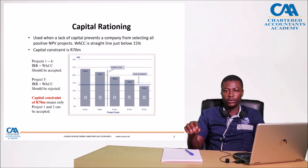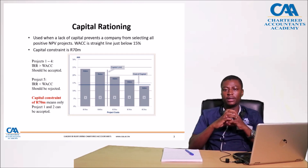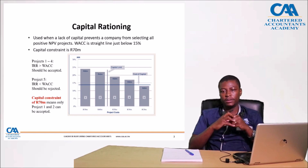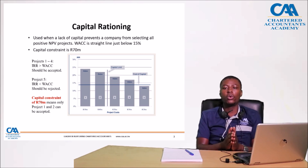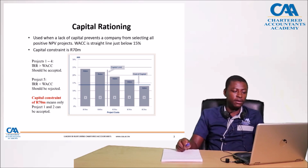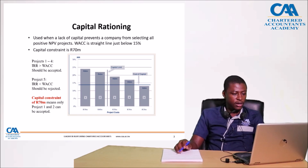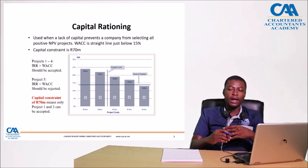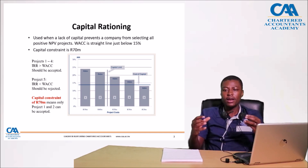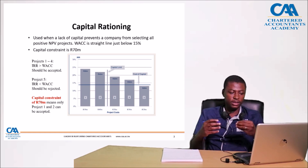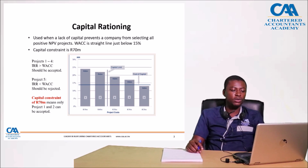What do we mean by capital rationing? You will find that in most businesses, companies can get a number of opportunities, but their available capital to be invested can become a constraining factor. The question is: given their available capital, which projects should they invest in and why? If we look at the example where we have a constraint of 70 million dollars and we look at projects 1 to 4, their IRRs are greater than the cost of capital. Automatically, all of them should be accepted. But the problem is we have a capital constraint of 70 million dollars.